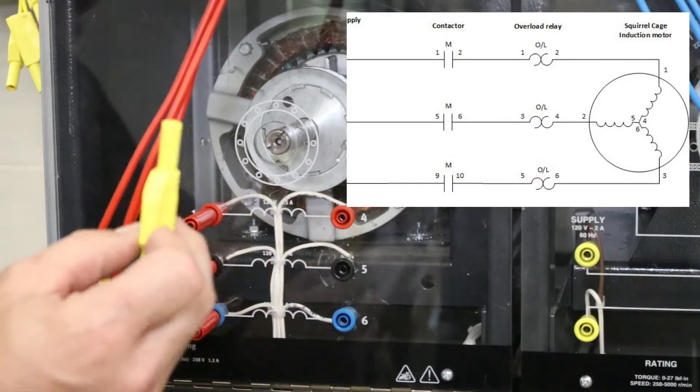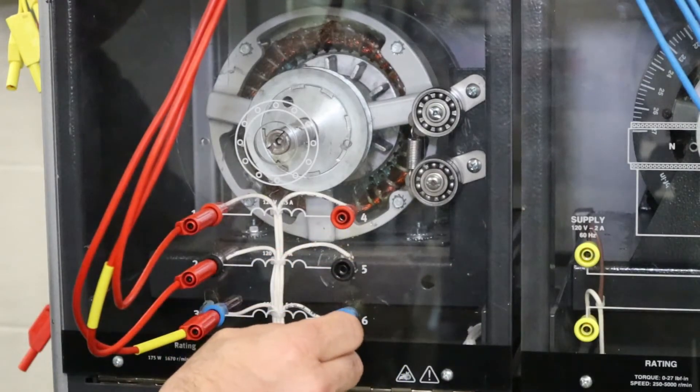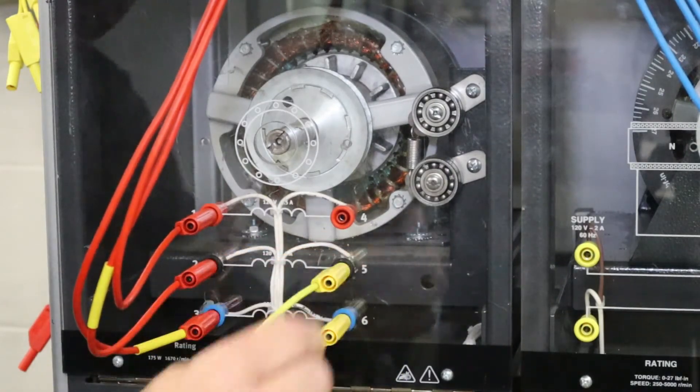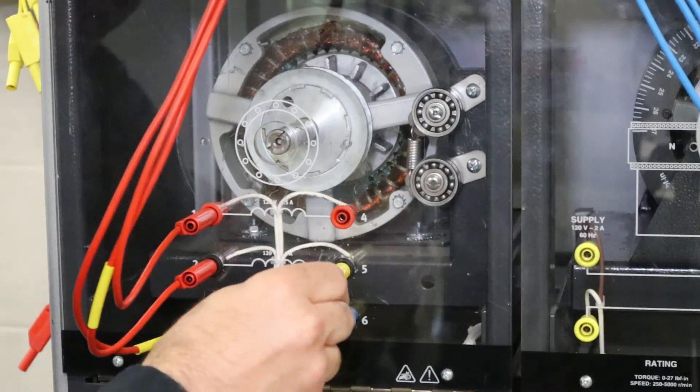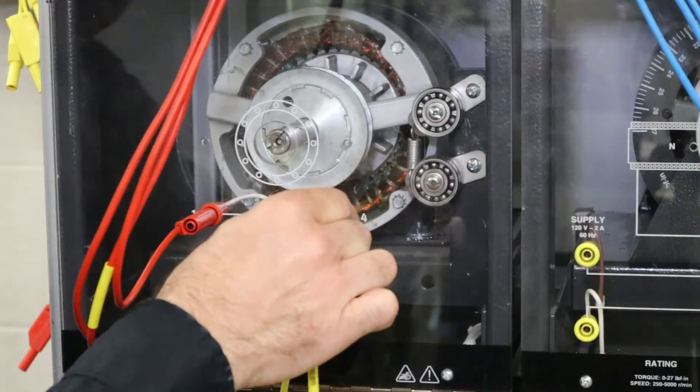Using the yellow leads, I'm going to connect terminal six to five, going in reverse order, and terminal five to terminal four.